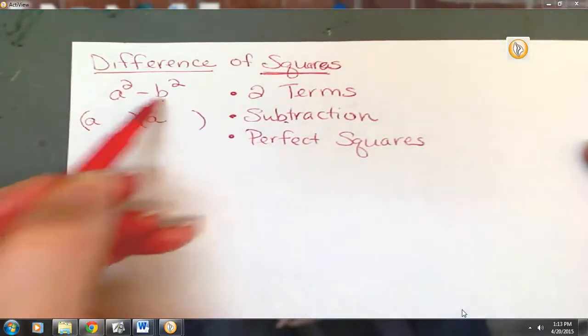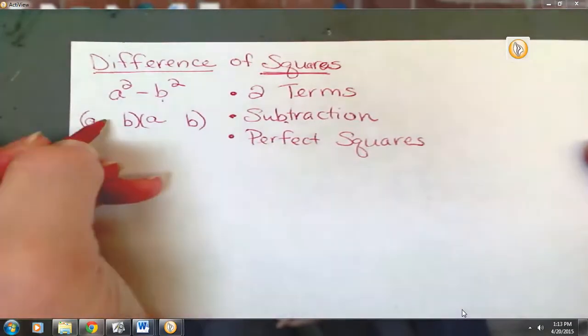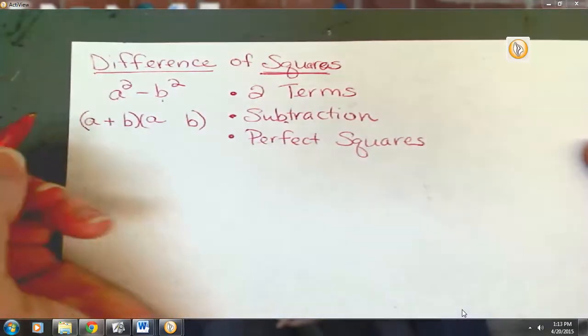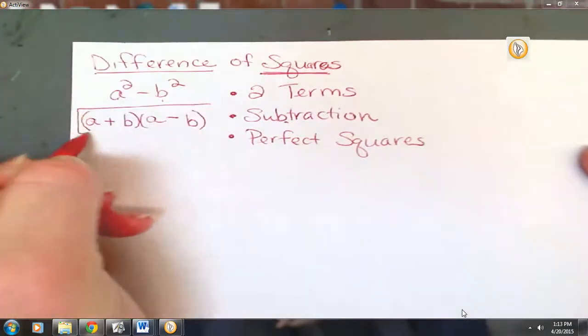What's the square root of b squared? B. One parenthesis I'm going to write is a plus b. The other parenthesis, a minus b. And that's how we factor. That would be the factored form.